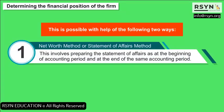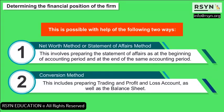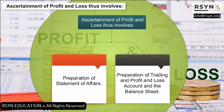This is possible with the help of two ways: 1. Net worth method or statement of affairs method — this involves preparing the statement of affairs at the beginning of the accounting period and at the end of the same accounting period. 2. Conversion method — this includes preparing trading and profit and loss account as well as the balance sheet. Ascertainment of profit and loss thus involves preparation of statement of affairs, and preparation of trading and profit and loss account and the balance sheet.